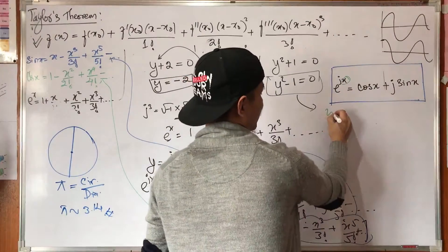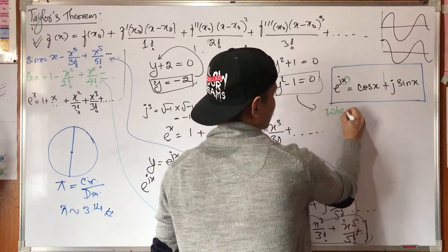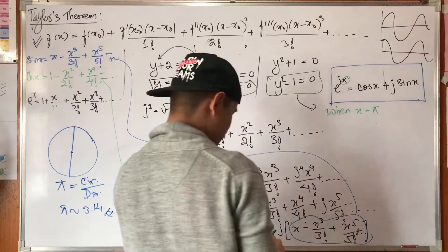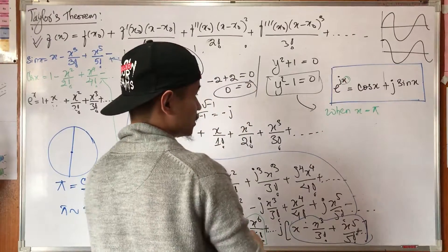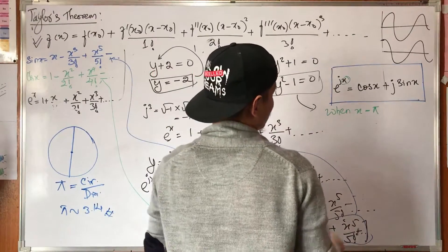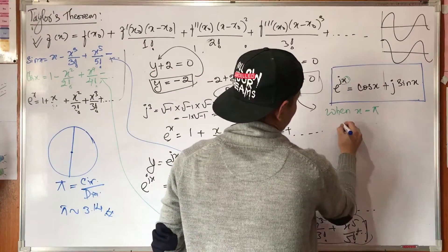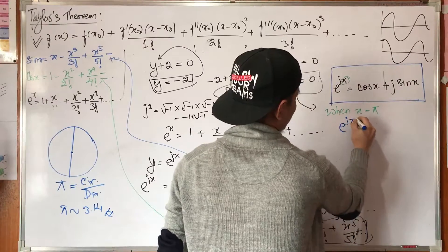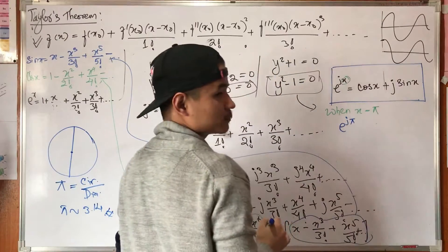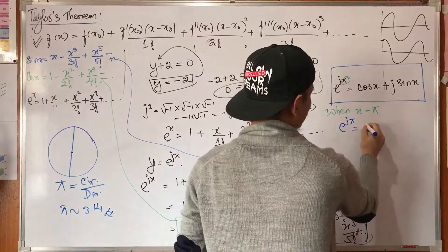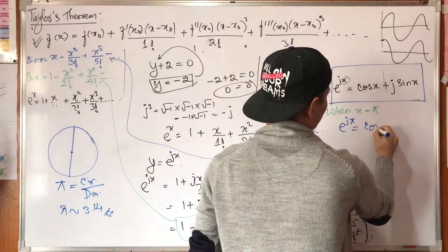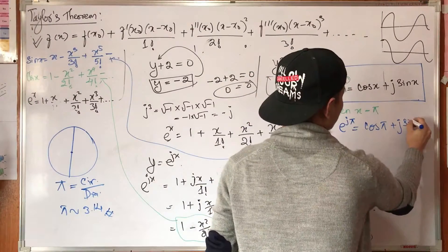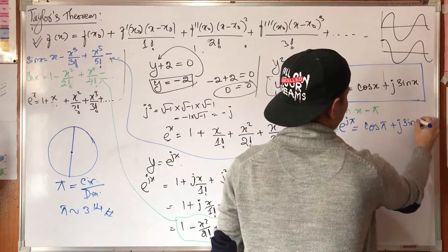Now let x equal to pi. Substituting x equals pi gives: e to the power j times pi equals cos pi plus j sin pi.